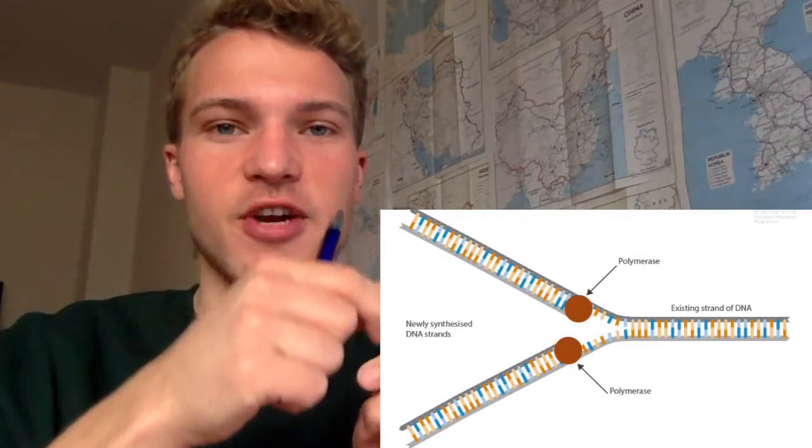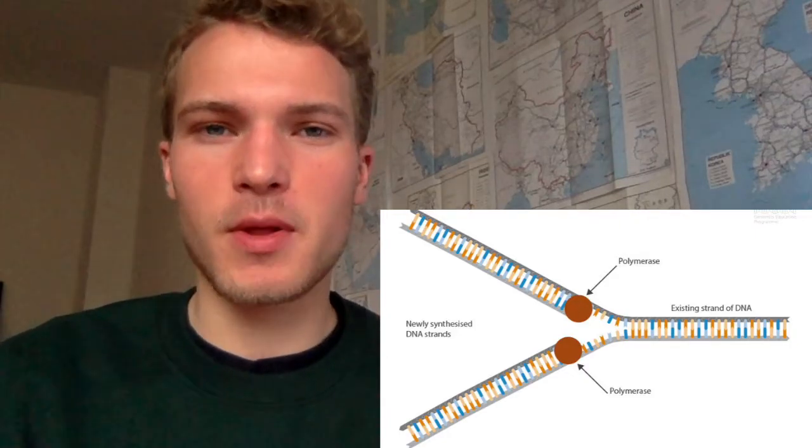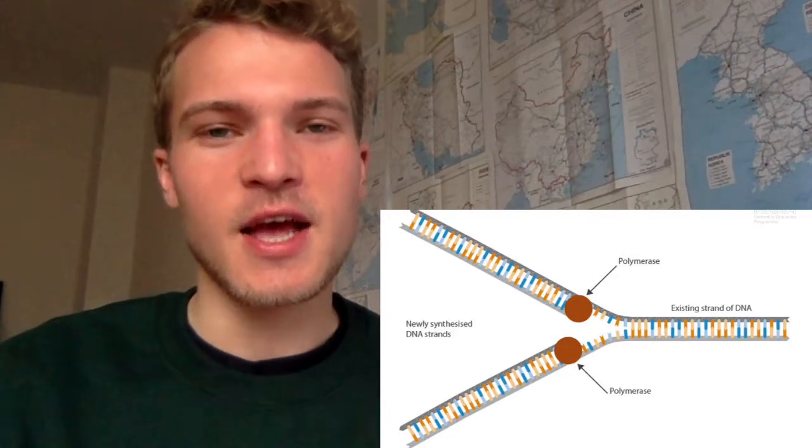Something important to note, which we'll cover in the next video for HL students, is that replication happens in two opposite directions. DNA polymerase can only work in one direction, so it works in one direction on one strand and the opposite direction on the other, which creates a complicated situation for one of the two strands. For now, DNA helicase and DNA polymerase are the two enzymes to remember; the others we'll look at another time.